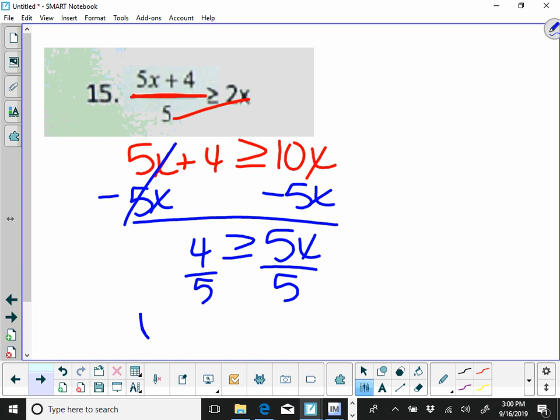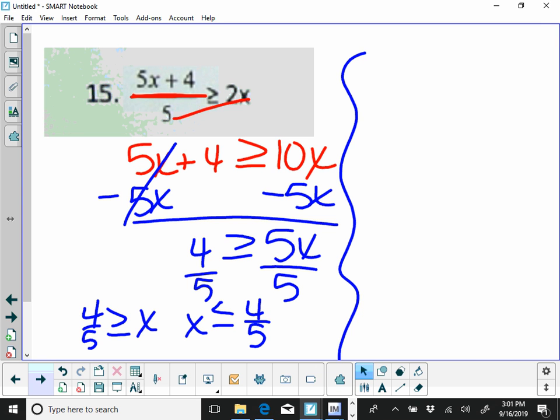And then I would divide by 5, and x would be less than or equal to, because I do have to flip that around. So I'll show you. We've got 4 divided by 5 is greater than or equal to x, so I'm going to flip that around to get my x on the left, and it's going to be x is less than or equal to 4 divided by 5. I'm going to show you the other way as well.